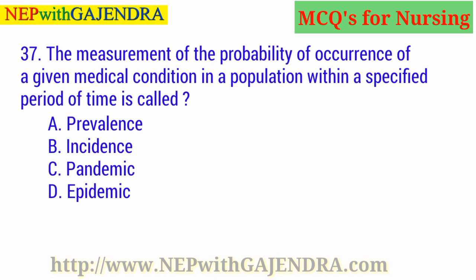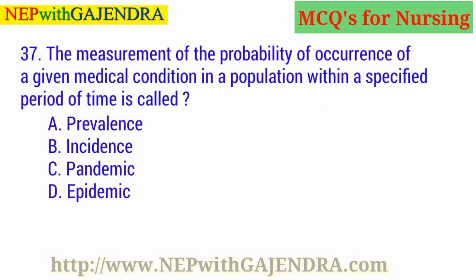The measurement of the probability of occurrence of a given medical condition in a population within a specified period of time is called: A. Prevalence. B. Incidence. C. Pandemic. D. Epidemic. The right answer is B: Incidence.